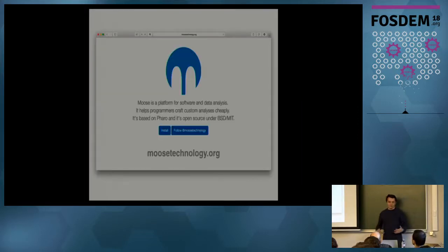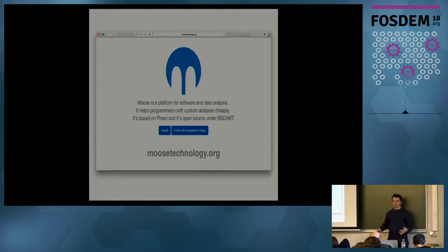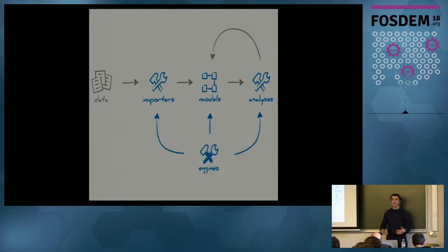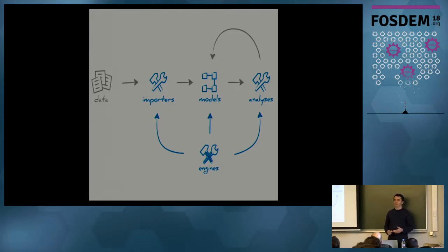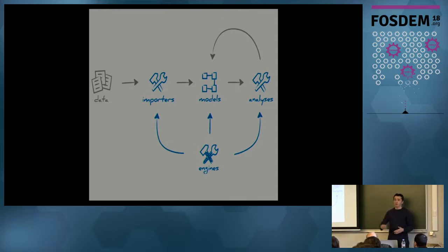Moose, in a few words, is a platform for software and data analysis. It's completely open source under MIT. Its goal is to help developers write custom analysis easily. The focus of Moose is not on providing you with a huge list of predefined analyses that you can apply out of the box on your software systems. Rather than that, the focus is shifted towards what we call engines — tools for building other tools. That's a collection of engines that allow you to build different types of tools you're going to use during an analysis.